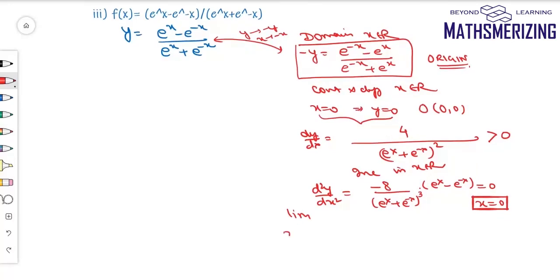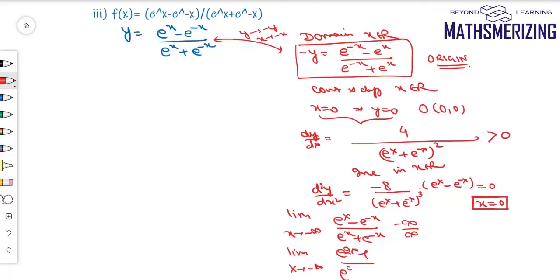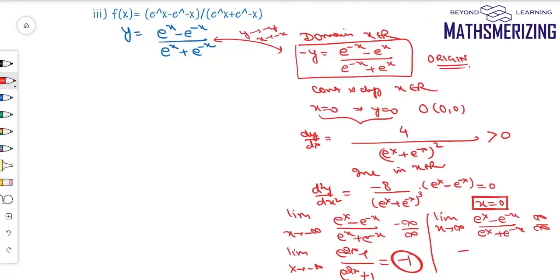Finding the limiting values: as x → −∞, the form is −∞/∞. Dividing by e⁻ˣ gives the limit as x → −∞ of (e^(2x) − 1) / (e^(2x) + 1), which equals −1. Similarly, the limit as x → +∞ has the form ∞/∞, and solving gives the limit as +1.